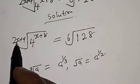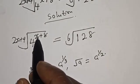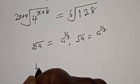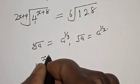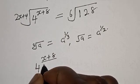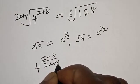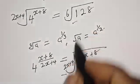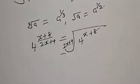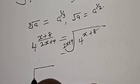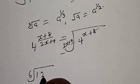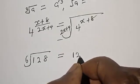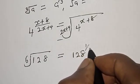The (2x+4)th root of 4 raised to power x plus 8 is the same thing as 4 raised to power (x+8) over (2x+4). And for the right-hand side, the 6th root of 128 is equal to 128 raised to power 1 over 6.